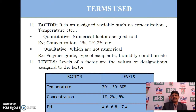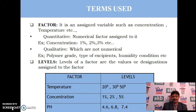The basic terms used in optimization or experimental design are: Factor — it is an assigned variable such as concentration, temperature, or any other factor. It may be quantitative or qualitative in nature, such as percentage values or non-numerical designations. Examples include polymer grade, types of excipient, and so on.